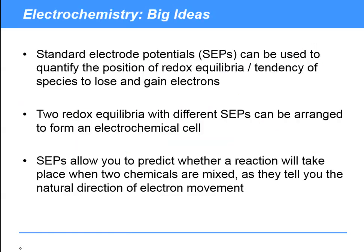And so effectively, this amazing simple idea of a standard electrode potential is enabling us to make predictions about which redox reactions will and won't take place. So to summarize, standard electrode potentials are there to quantify the position of redox equilibria. That's their purpose. It's essentially the tendency of a species to lose or gain electrons. If you've got two redox equilibria with different standard electrode potentials, you can form an electrochemical cell and work out the potential difference it will produce. And also, these standard electrode potentials allow you to predict whether a reaction will take place when two chemicals are mixed, even if they're not separated and forming a cell, as long as they are in some kind of electrical contact, because it tells you the natural direction of electron movement, which is from negative to positive.